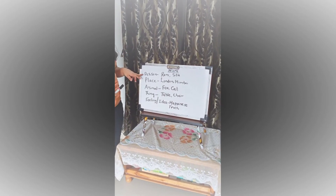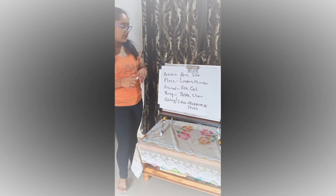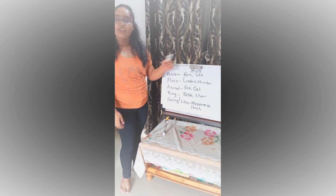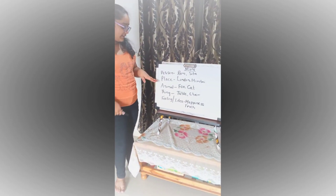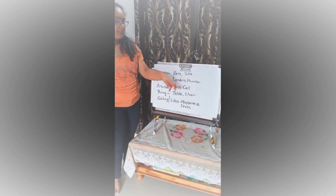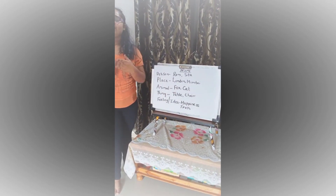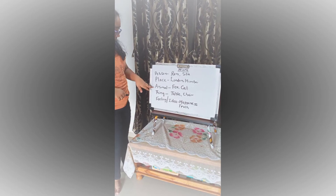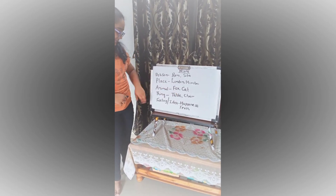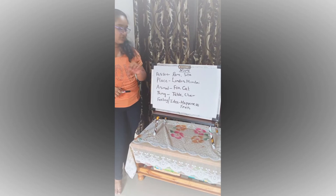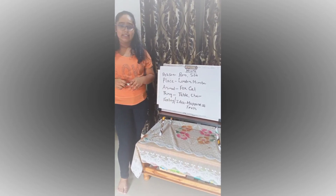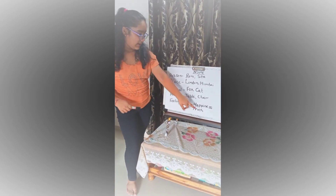Person — it can be a name of any person, like a name of a boy like Ram or a name of a girl like Sita. Next we have place — we have London, Mumbai, and so many other places. In animals we have fox and cat. Thing — table, chair. Feeling or idea — these are abstract nouns.